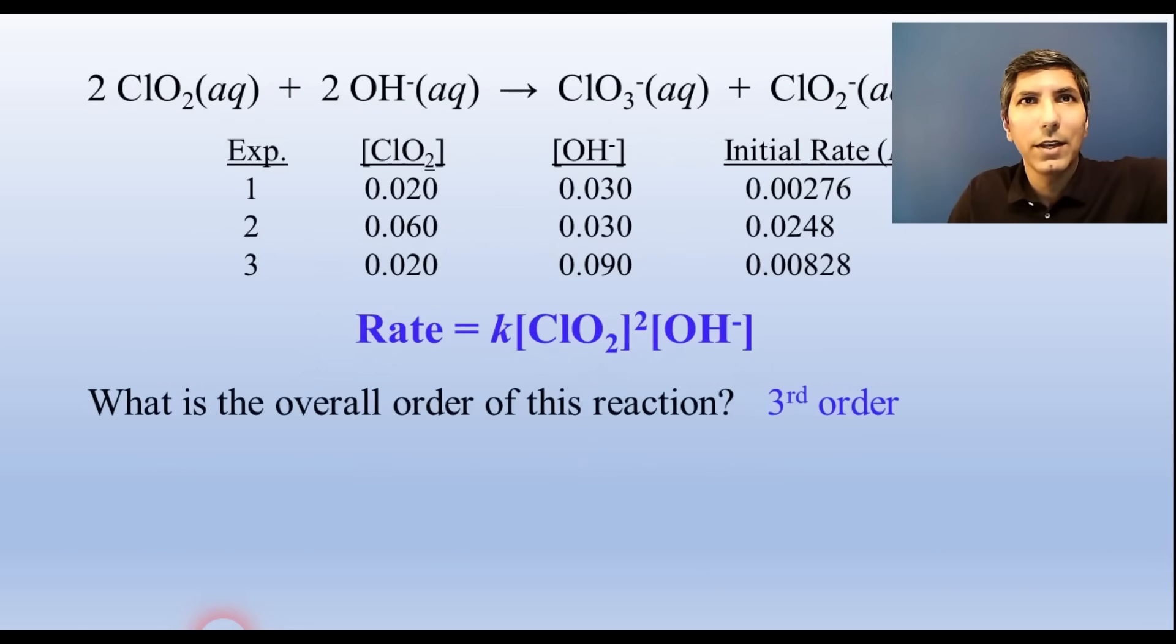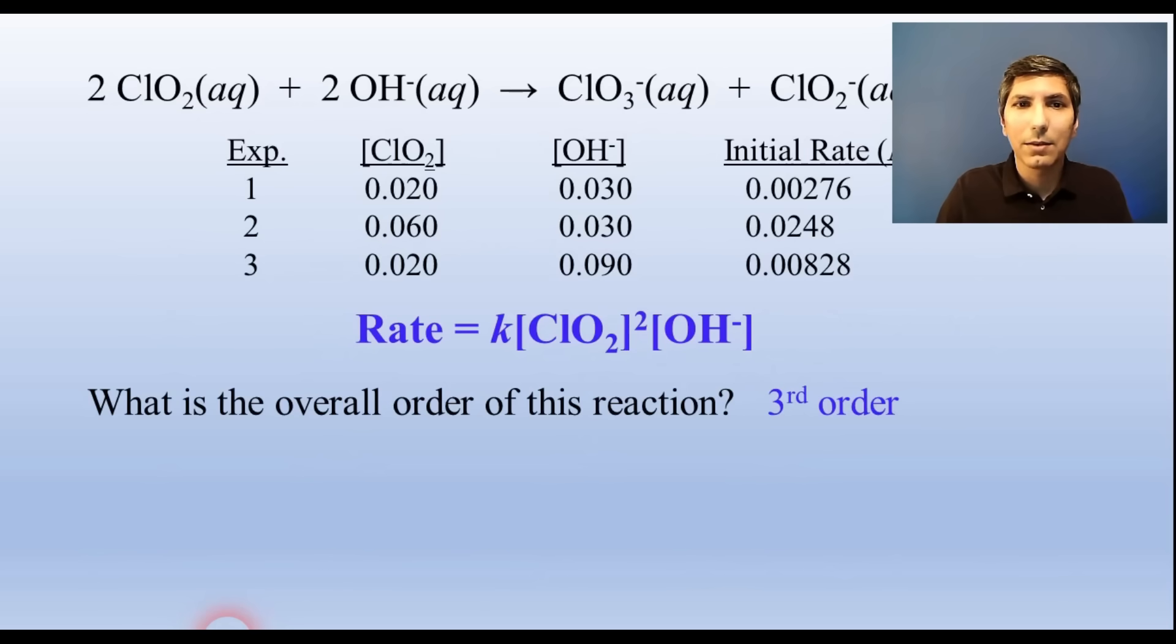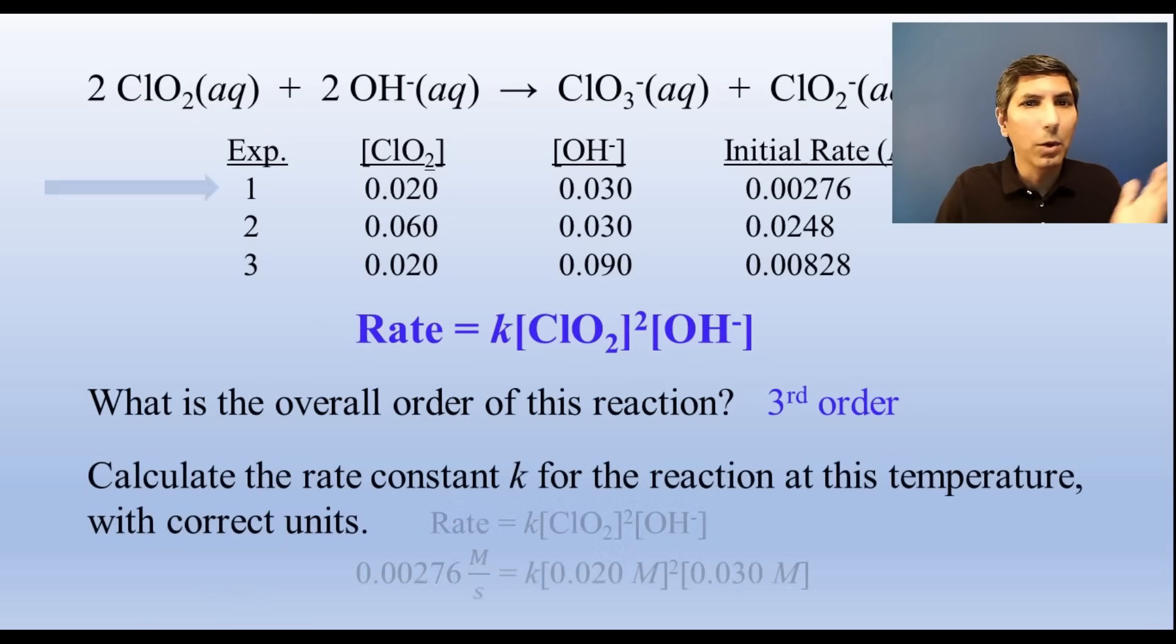The overall order is just the sum of the individual orders of the reactants. So it's overall third order in this case. We can calculate the rate constant very easily by taking the data for any one of the three experiments and plugging it into the rate law and solving for K using correct units.